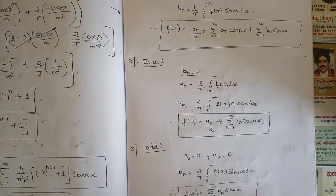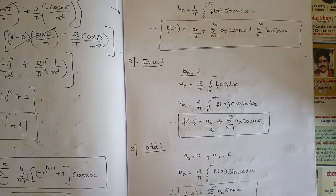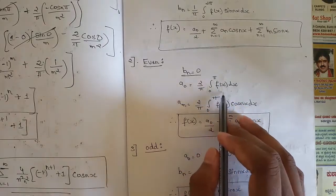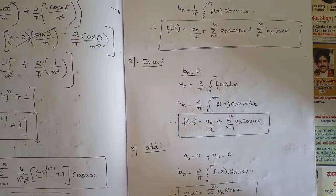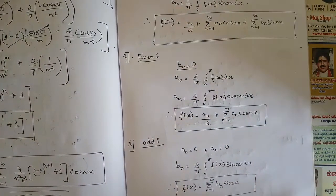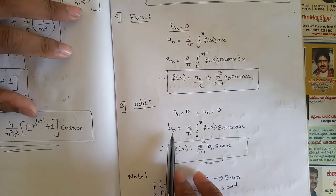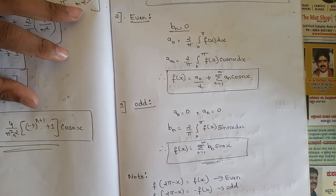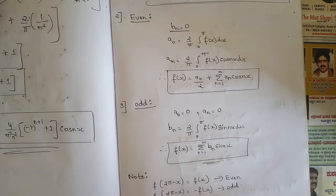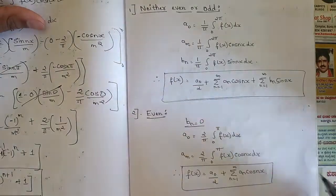For the even function case, b_n equals zero, and a-naught equals two over pi. There is no change in the even and odd function formulas themselves: a-naught equals two over pi times the integral from zero to pi of f(x) dx, a_n equals two over pi times the integral from zero to pi of f(x) cos(nx) dx, and b_n equals zero. For the odd function case, a-naught equals zero and a_n equals zero. b_n equals two over pi times the integral from zero to pi of f(x) sin(nx) dx. There is no change in the formulas for even and odd functions — only the limits have changed.